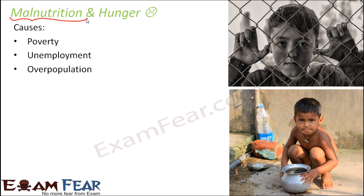Overpopulation is another cause. The population is increasing very fast, and when there are so many human beings, they need more food. But food production is not increasing at the same rate as the population. Providing employment to such a rapidly increasing population is also becoming a difficult task. Because of all these reasons, there is a lot of malnutrition and hunger everywhere, which causes diseases and even death.